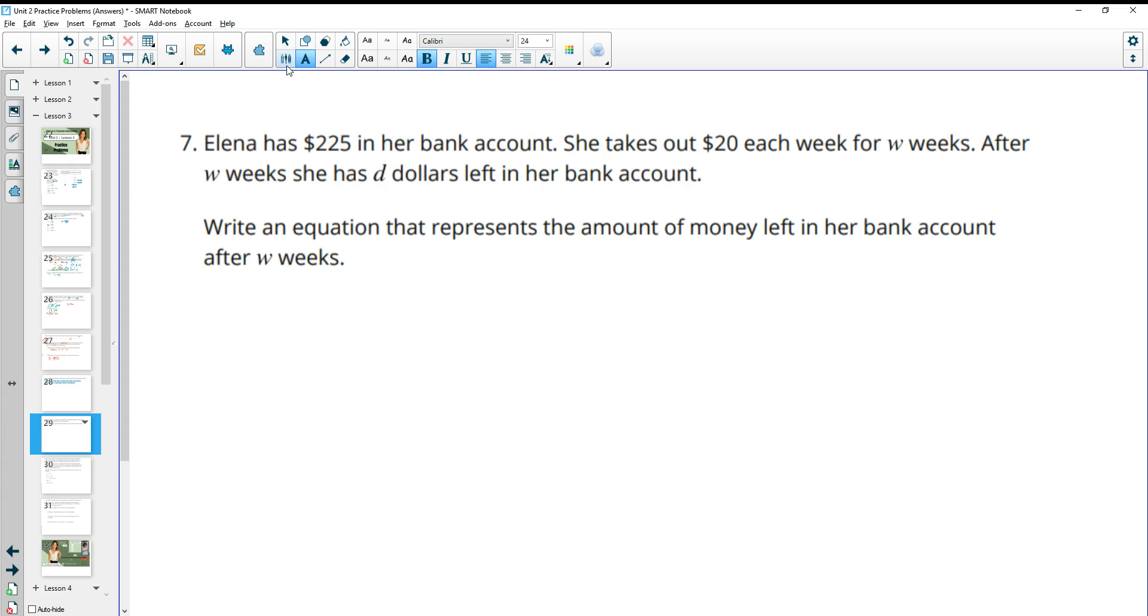Number seven, Elena has $225 in her bank account. She takes out $20 each week for W weeks. After W weeks, she has D dollars left in her bank account. Write an equation that represents the amount of money left in her account after W weeks. So maybe you can write this right away. But you can also set up some examples to help you see a pattern. So she starts with $225.